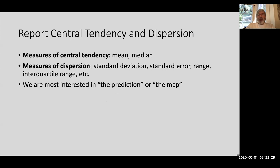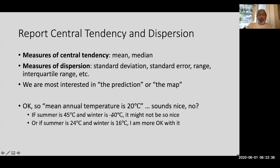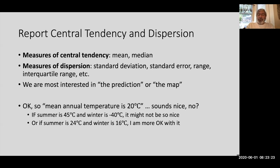Generally when we do one of these studies, we're most interested in the prediction — in niche modeling, it's the map. So imagine I tell you mean annual temperature in a place is 20 degrees centigrade. But what if the variation through the year is from 45 degrees average in the summer to negative 40 degrees in the winter? Maybe I can't deal with that. But if the variation is 24 in the summer down to 16 in the winter, I could be okay. So you want more than just the prediction and the measure of central tendency.